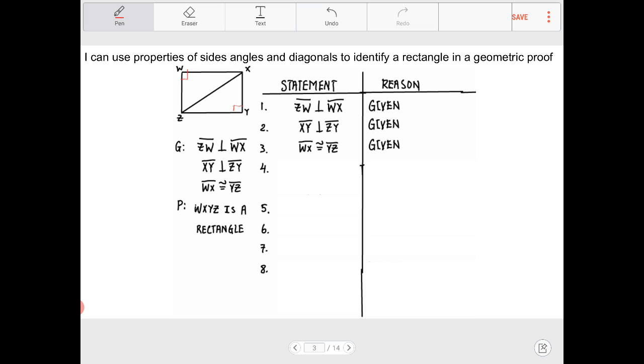I also recognize that WX and YZ are congruent to one another so I am going to label it with tick marks there as such.